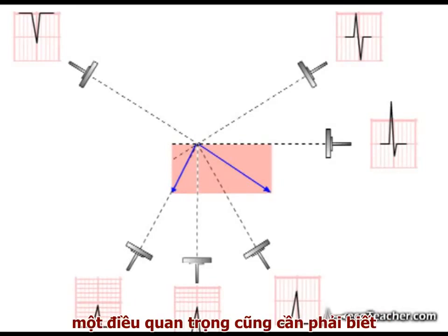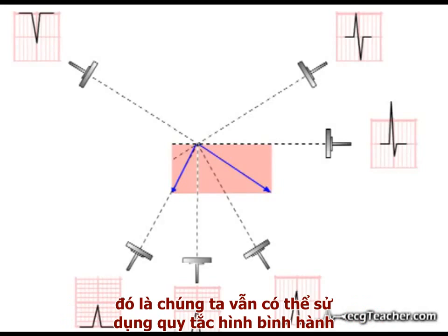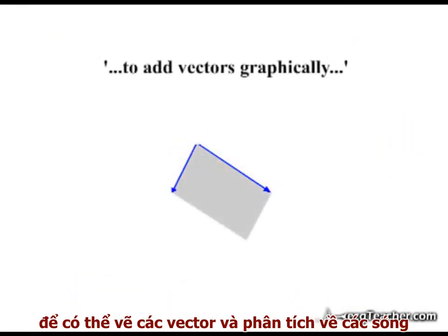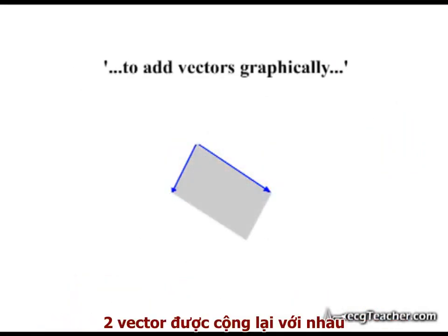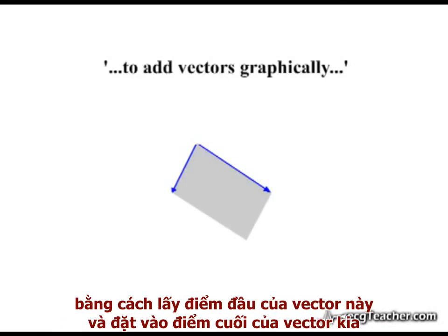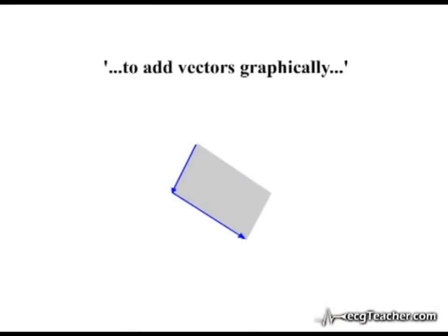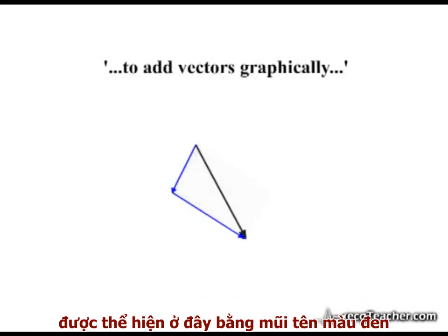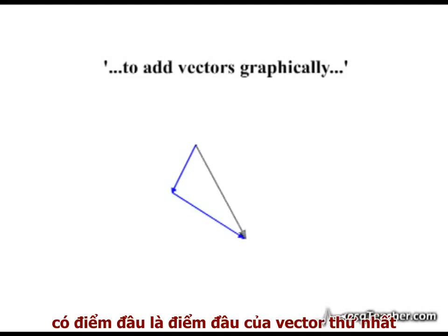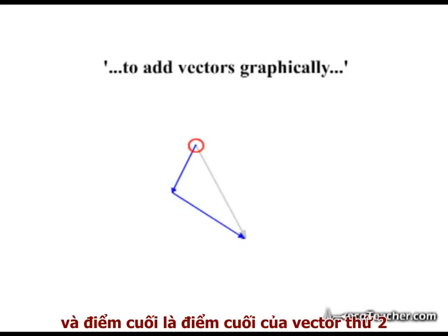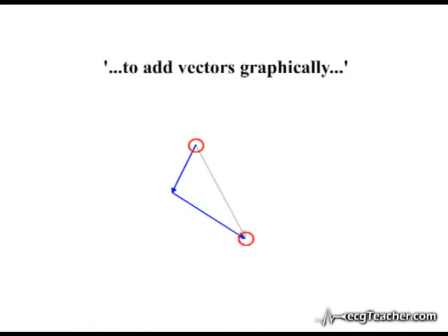It is also very useful to note that we can use the parallelogram rule to add vectors graphically. Two vectors may be added together by placing the initial point of one at the terminal point of the other. The total vector generated by the addition, shown here in black, is represented in magnitude and direction by a vector drawn from the free initial point to the free terminal point.